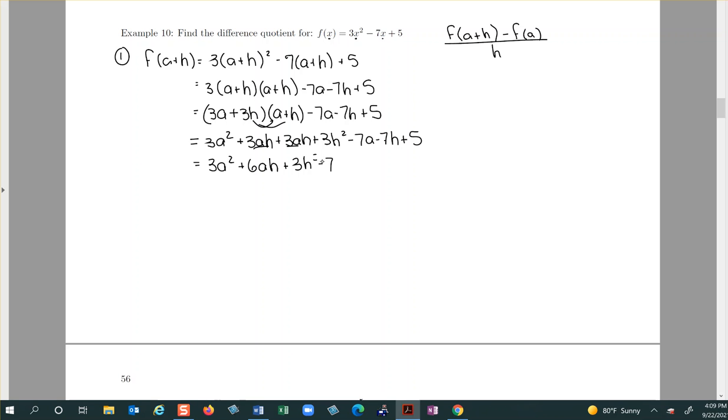I don't know what happened there, let me put that as a two. Three h squared minus seven a minus seven h plus five. All right, so that's step one.